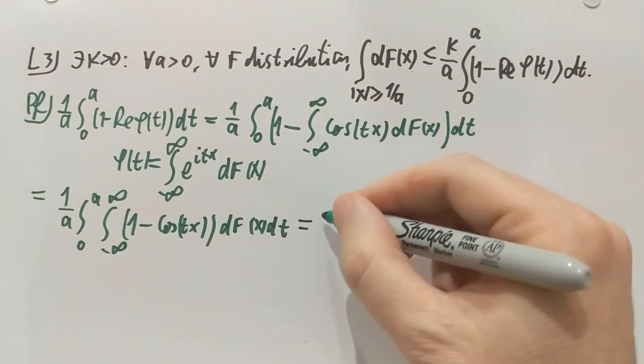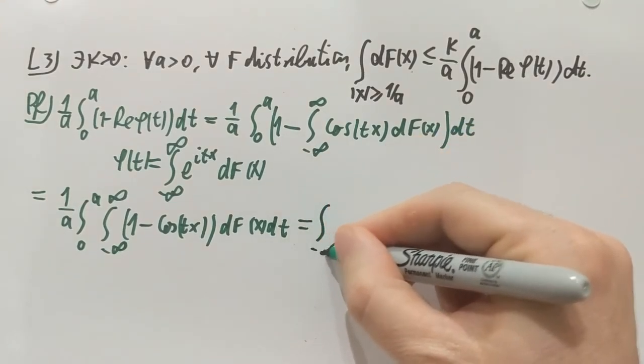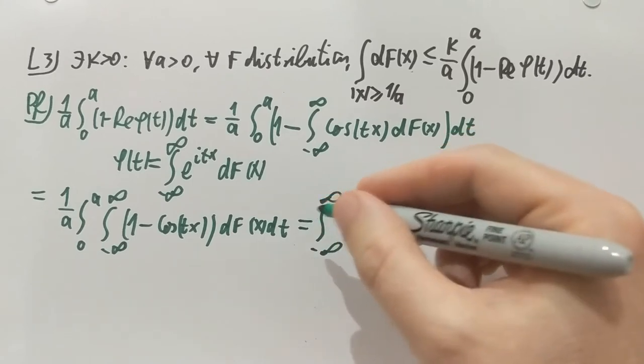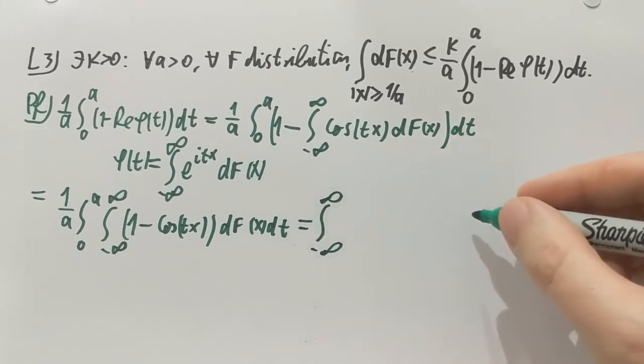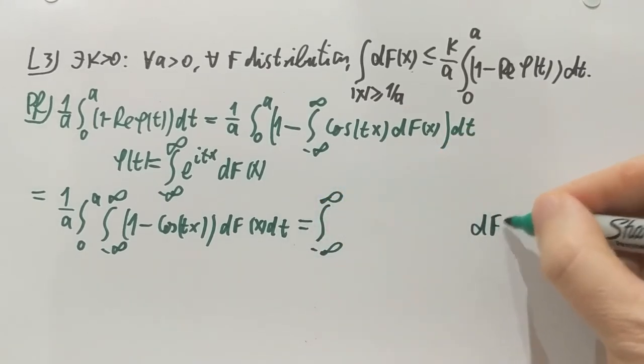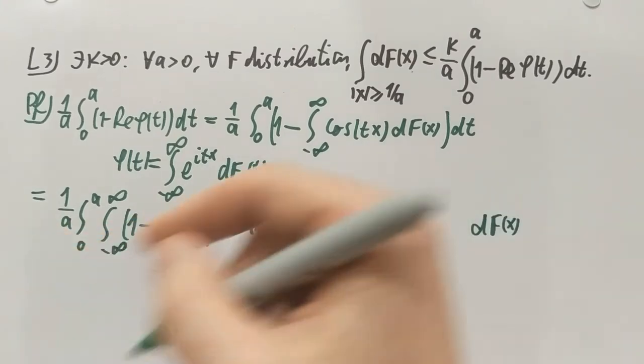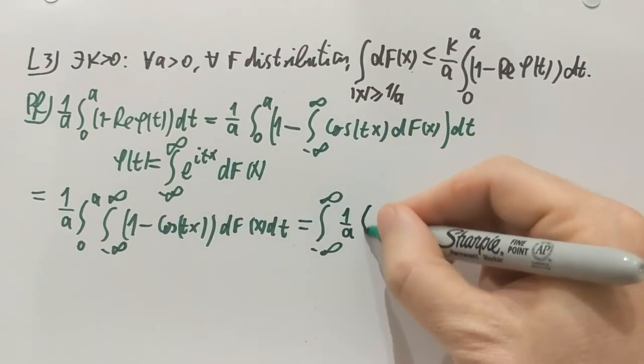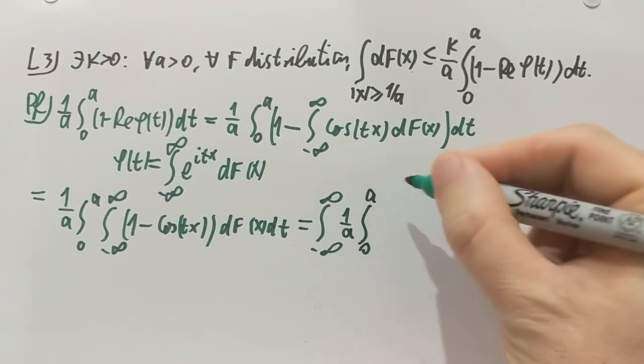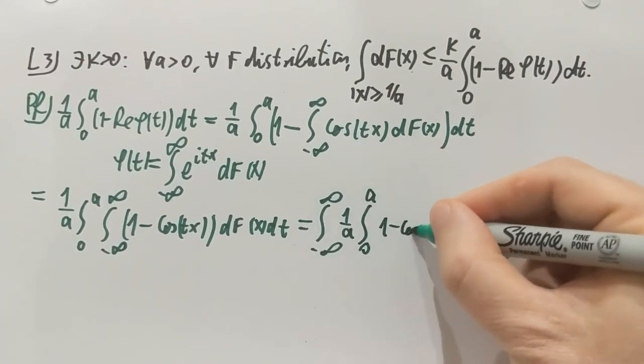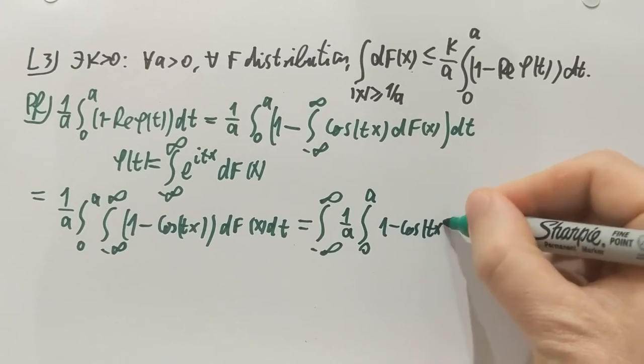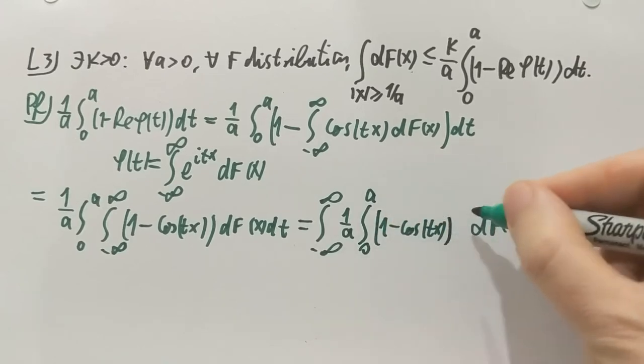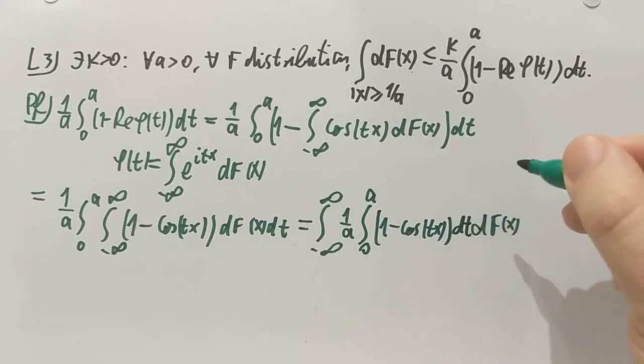So let's do that. I'm going to integrate from minus infinity to infinity with respect to f outside. I'm going to bring this constant 1 over a in here. And I'm going to do the integral from 0 to a of 1 minus cosine of tx. And this one is integrated with respect to t, which is nice because I know how to integrate that.